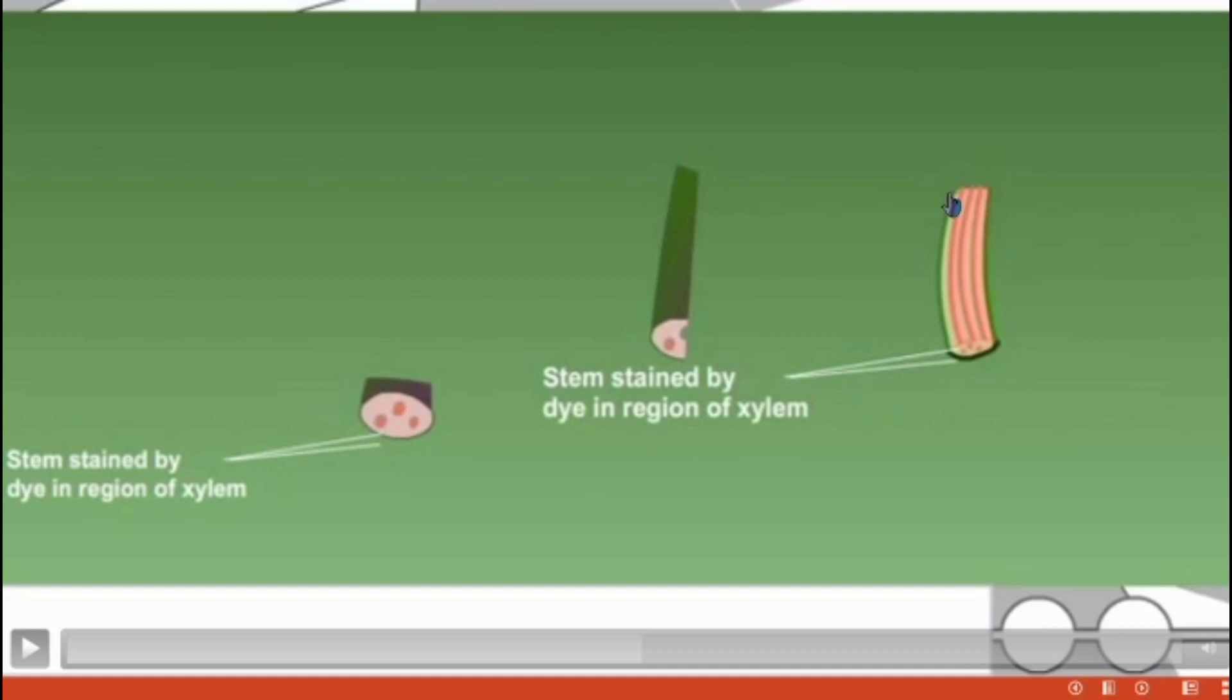We cut the middle of the stem; the stem is stained by dye in the region of xylem. And finally, we can clearly notice that the whole transport of the water system with the help of the xylem tissues changes into pink color.